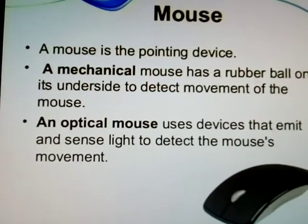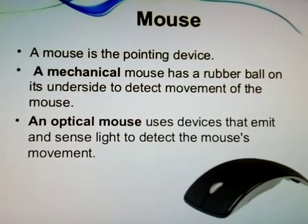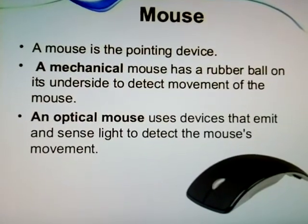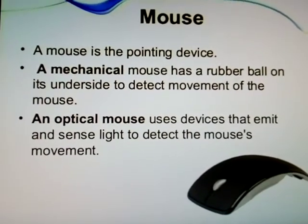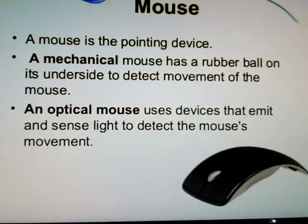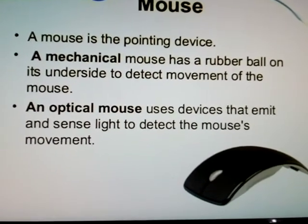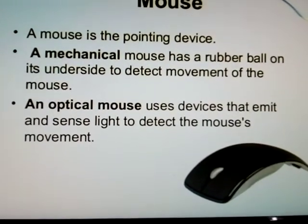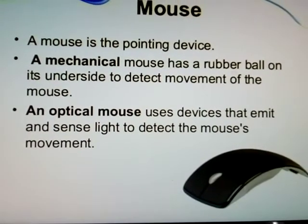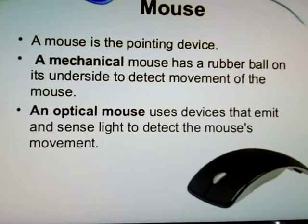The mouse is a pointing device. A mechanical mouse has a rubber ball on the underside to detect movement. An optical mouse uses devices that emit light to detect the mouse's movement.